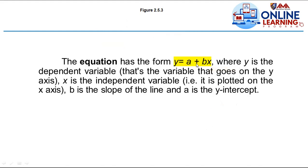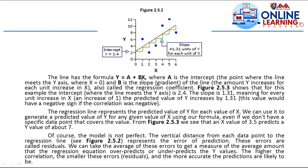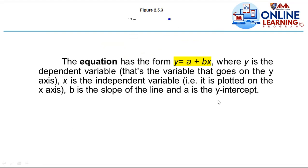The equation is of the form y equals a plus bx, where y is the dependent variable that goes on the y-axis, x is the independent variable on the x-axis, b is the slope of the line, and a is the y-intercept — the value of y when x equals zero.